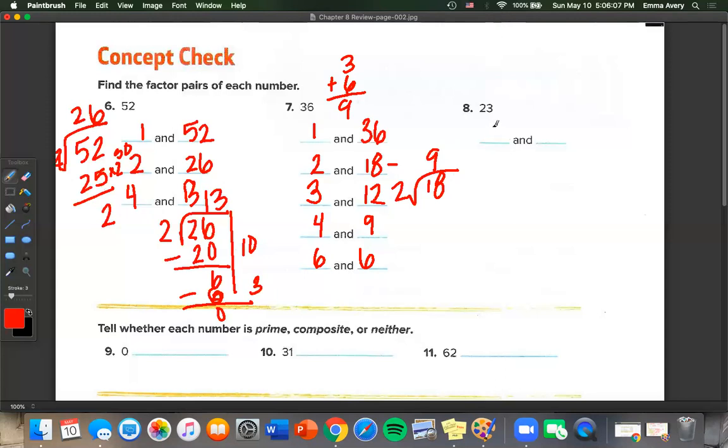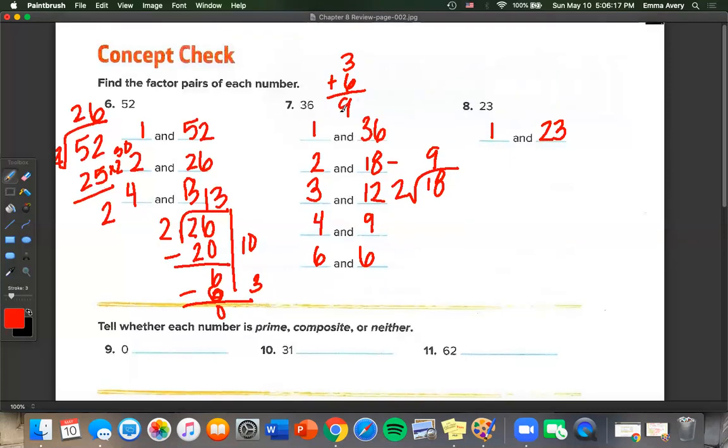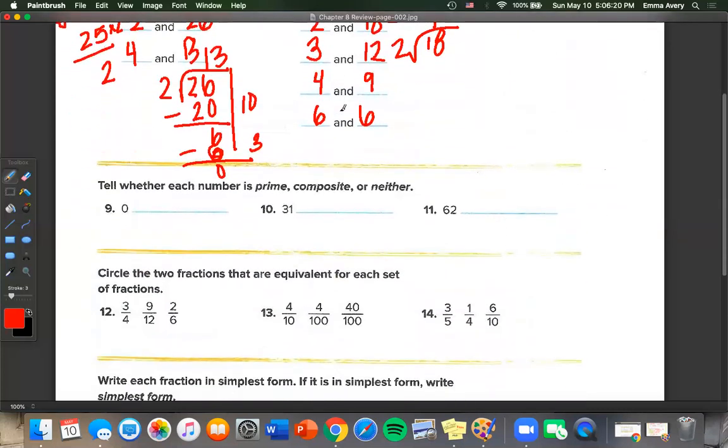Number 8. They give us a pretty easy hint that this is a prime number, because they only give us one space. So 1 times 23 is 23. Now we need to tell whether each number is prime, composite, or neither. 0 is one of those ones that's neither. 31 is an odd number, and 3 plus 1 is 4. 4 isn't divisible by 3. So this one must be prime. And 62 is even. So this one is a composite number.